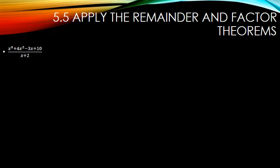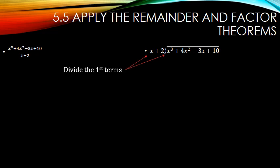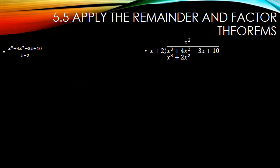Let's try this one. Make sure we have all the powers of x: cube, squared, first, constant — good. So divide the first terms: x cubed divided by x is x squared. Multiply: x squared times x plus 2 gives x cubed plus 2x squared. Then we subtract: x cubed minus x cubed is nothing, and 4x squared minus 2x squared is 2x squared.